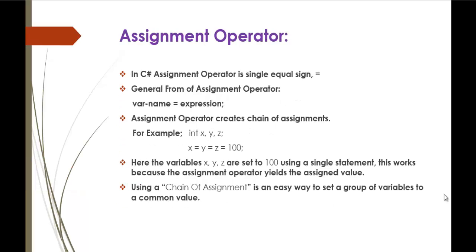In C#, the assignment operator is the single equals sign. If you want to assign a value to any variable then you can use the assignment operator — that is the single equals sign. The general form is: variable name equals expression, meaning the type of the variable must be compatible with the type of the expression.